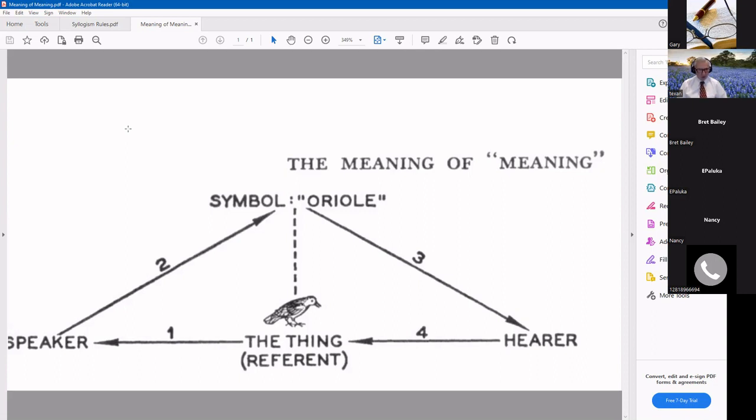So you know, let's think of the bird in the picture here. We'll just call it an oriole, a Baltimore oriole. And the speaker is going to convey that to the hearer. But the speaker has to think of it first and he gets an image in his mind of a bird, an oriole.